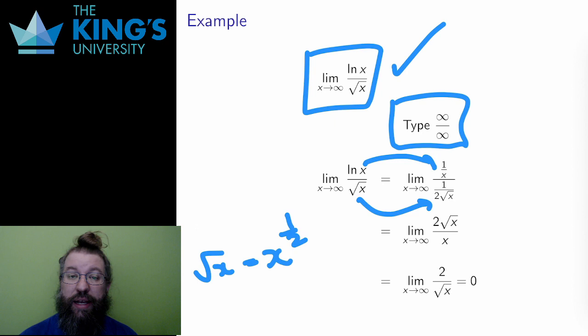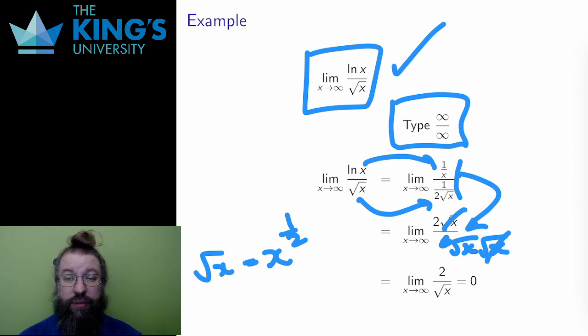Then I get a nested fraction, which I simplify in the usual way. The result of simplifying the nested fraction is 2√x/x. I can simplify this by canceling the √x. The denominator x is the same as (√x)², so one √x cancels and one √x remains in the denominator.